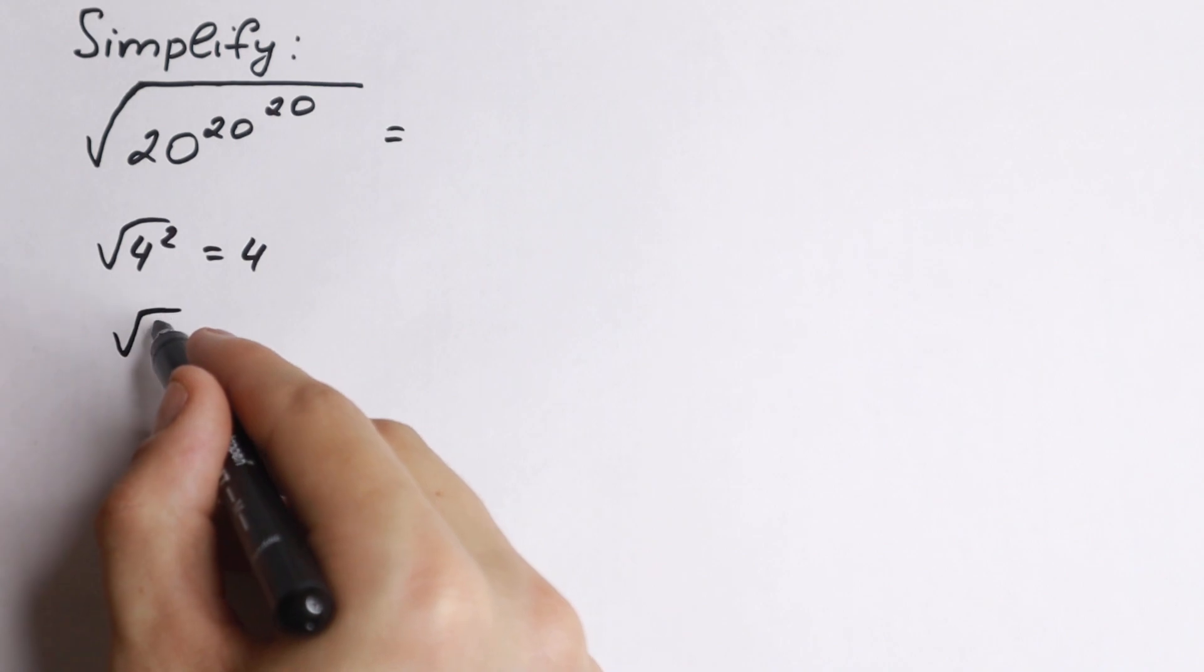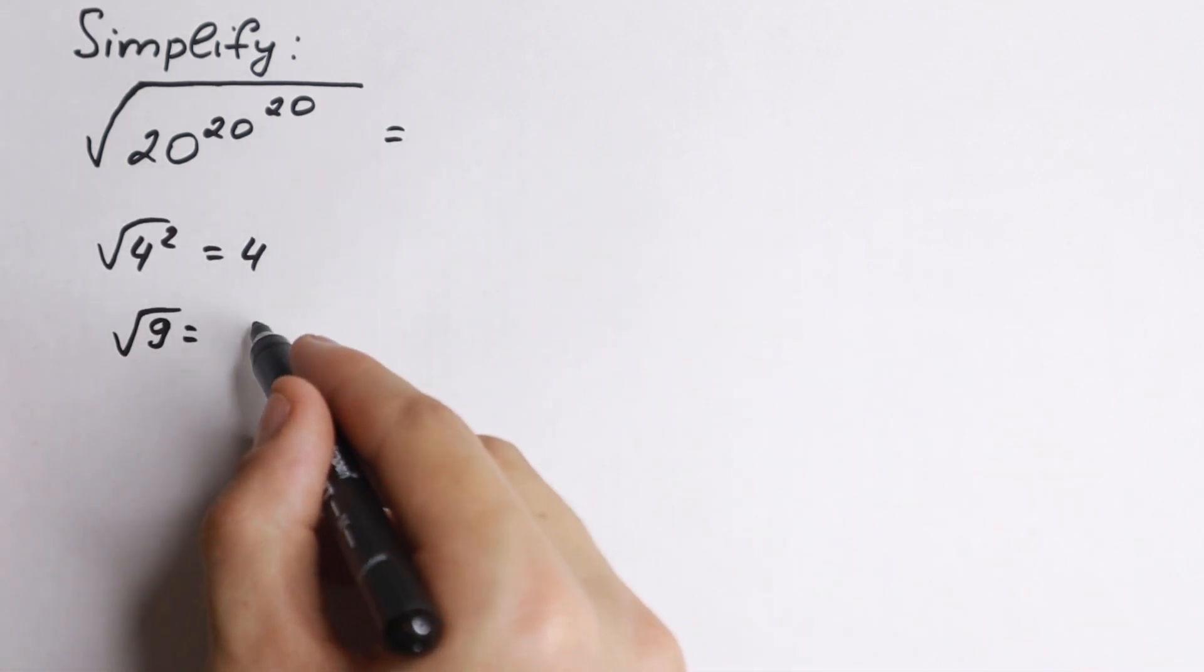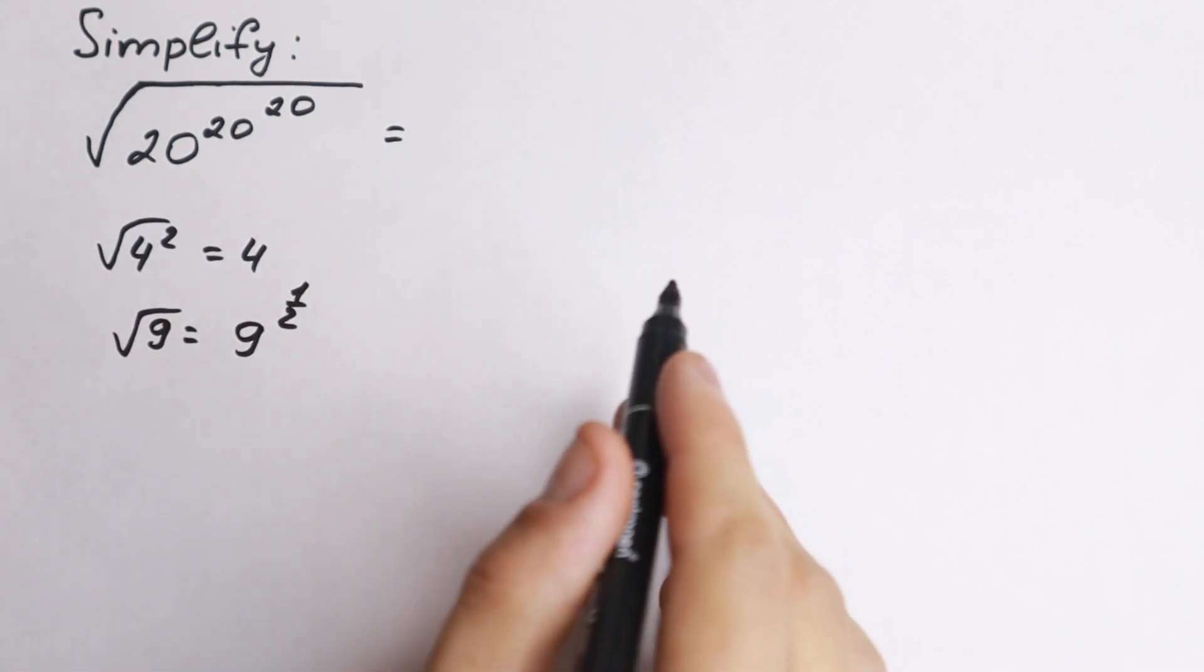First of all, for example, we have square root of 9. We can write this square root of 9 as 9 to the power 1 half. So we hope you understand this step.